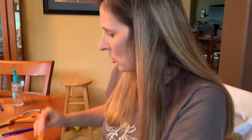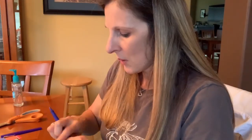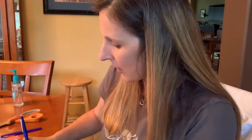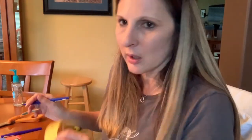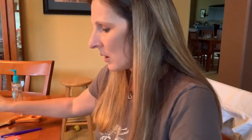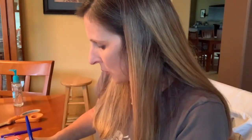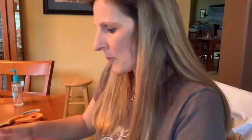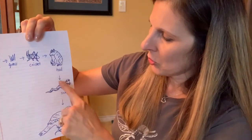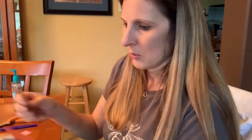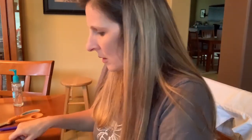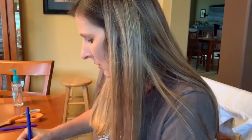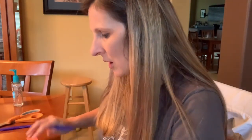Based on this food chain, I'm going to label my paper rectangles. On my yellow strip I'm going to write 'sun.' Green is for my plant — in this food chain it's grass, it could have been a tree, shrub, flower, or rose bush, but I just did grass. Then I'll use my other colors for my four animals. I'm going to label them cricket, toad, snake, and hawk. The colors don't really mean anything — they don't symbolize anything, it's just random.